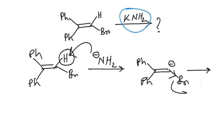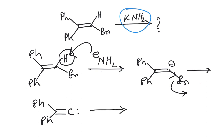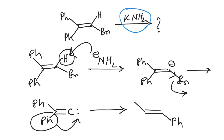So the Br⁻ will leave as Br minus, and you will have this carbon with two lone pairs — this carbene. Now in this carbene there will be a rearrangement: basically a migration of one of the phenyl groups over this carbon.